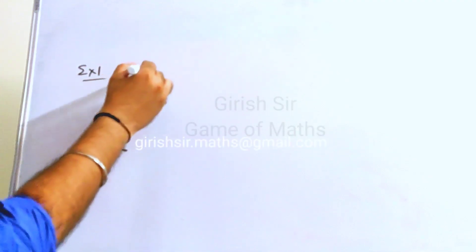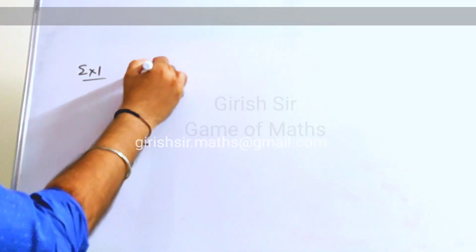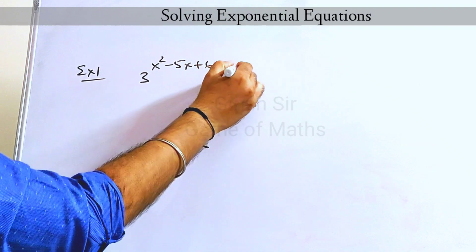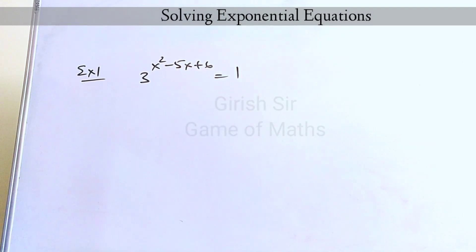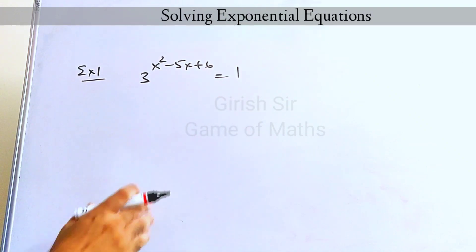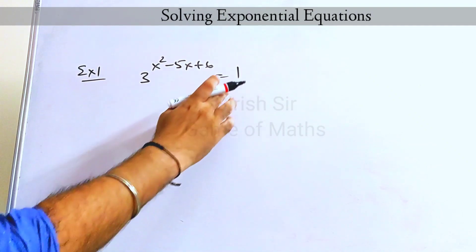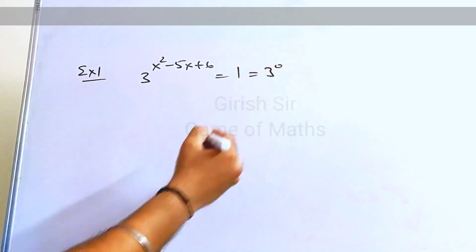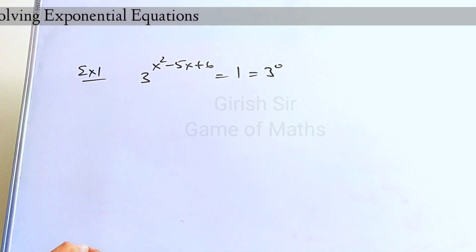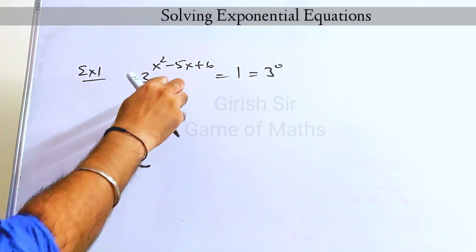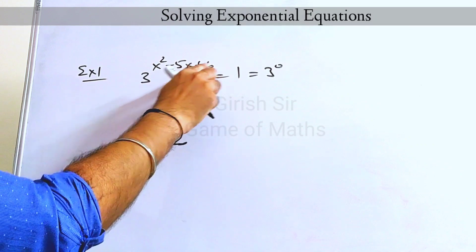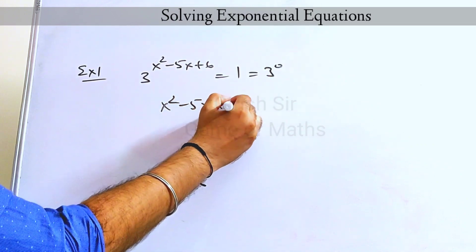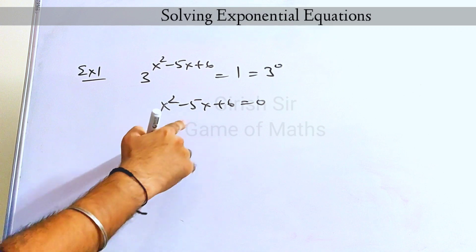The first example: we have to solve this equation. It's a simple one. The right-hand side can be written as 3 raised to 0. Now equating these powers, we will get this.